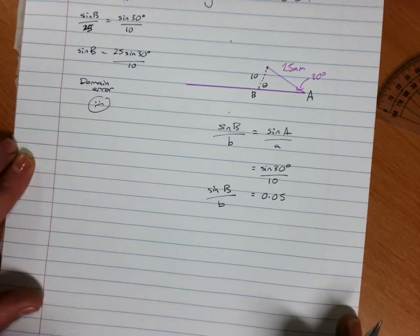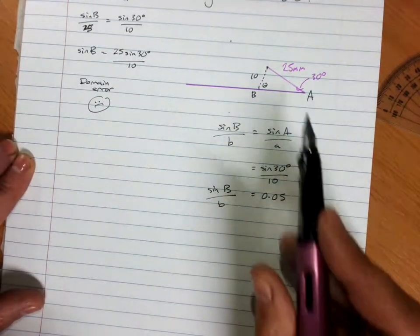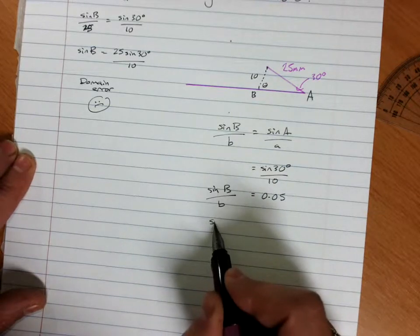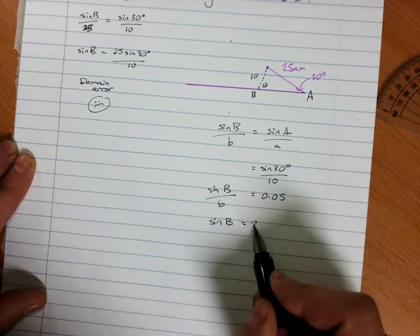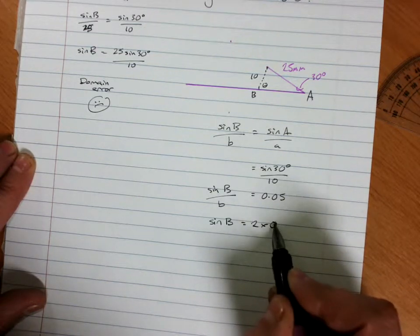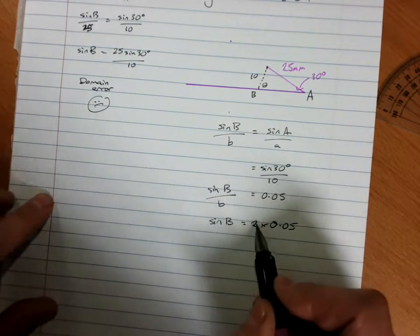So let's get side B involved, which is 25. So sine of our angle divided by 25, so times by 25, is 25 times 0.05. Oh, that's 1.25.